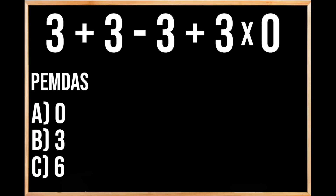Thanks for joining Uncomplicated Math, where we have a math problem that we're going to work through together and go over a common mistake that some people make when solving problems like this. The problem we have is 3 plus 3 minus 3 plus 3 times 0.